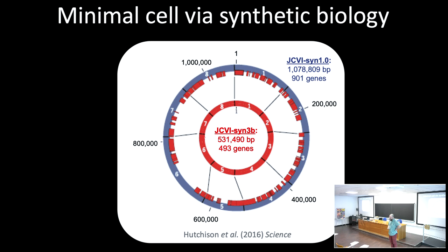An audience member asks whether you could just put an E. coli cell in a chemostat, wait 20 years, and arrive at a minimal cell. The speaker responds: Rich Lensky's group has been evolving under semi-batch conditions for close to 100,000 generations, and there's been no evidence for massive genome reduction in those experiments. There is gene loss, but not at the magnitude we're seeing here. It might take thousands or millions of years to see that level of genome erosion.